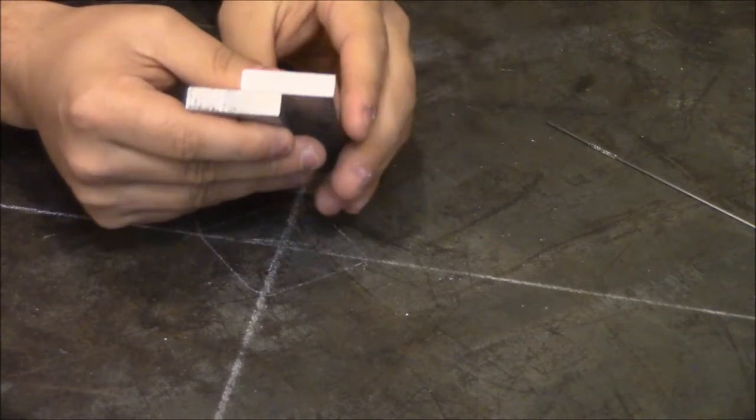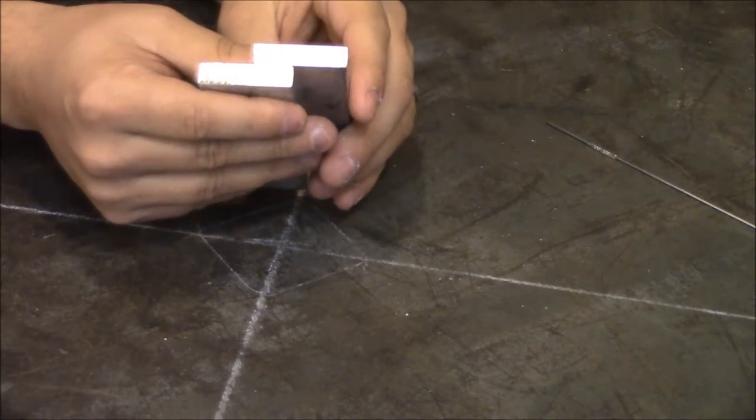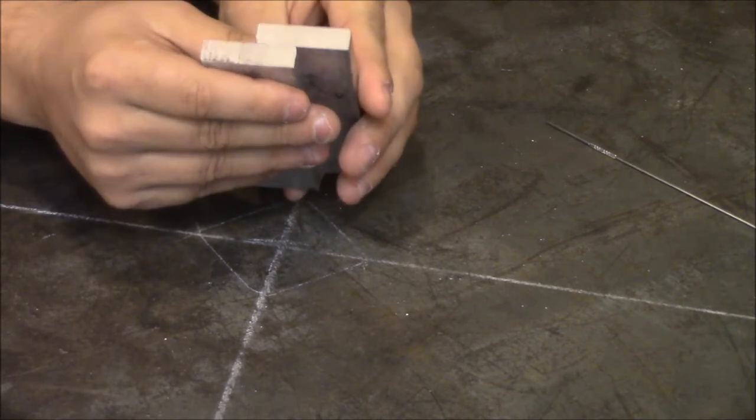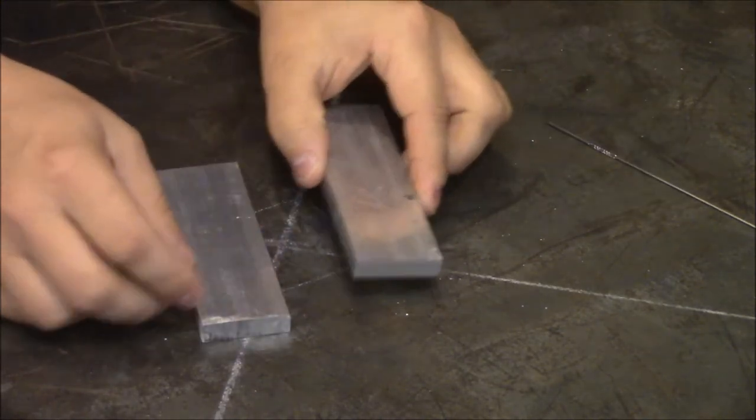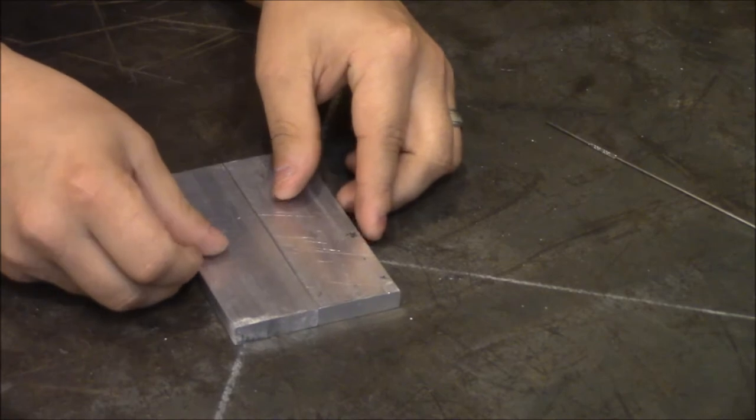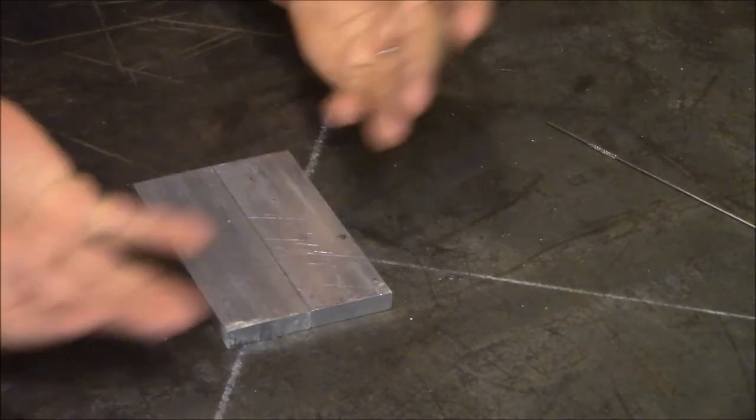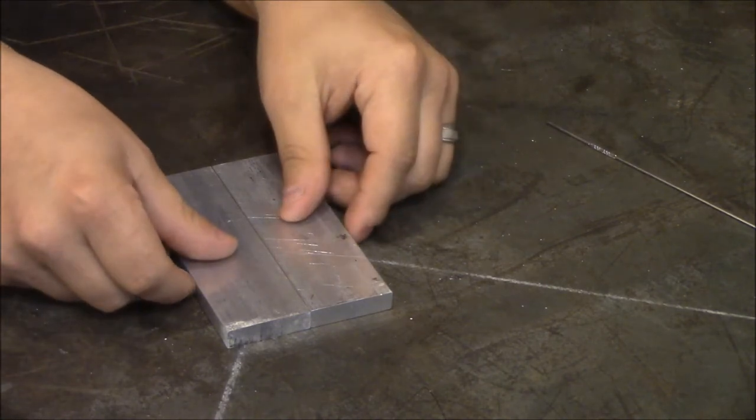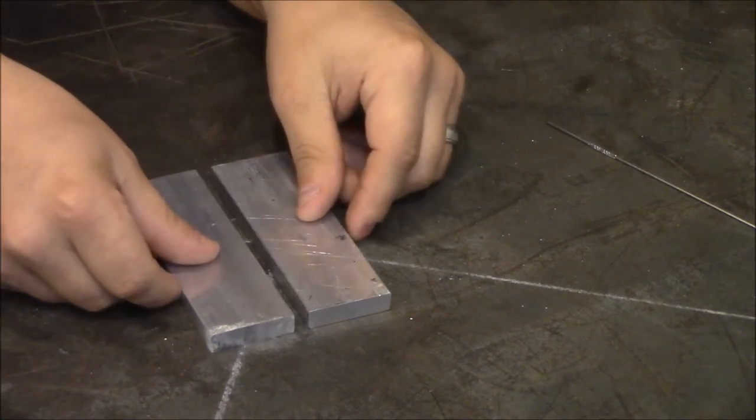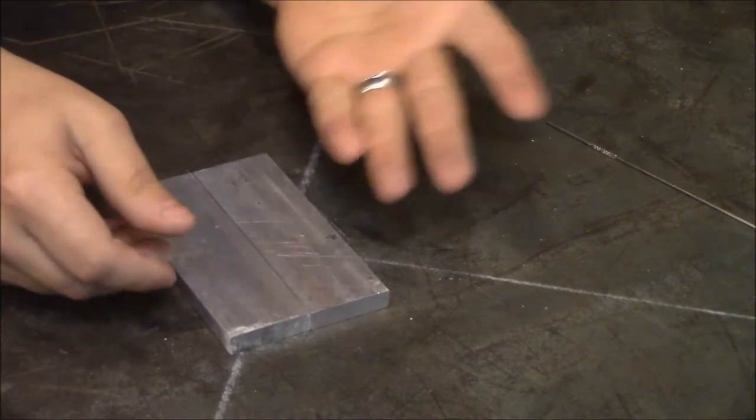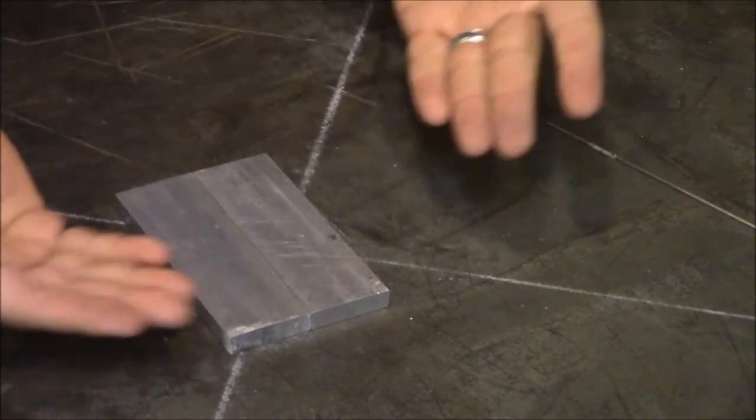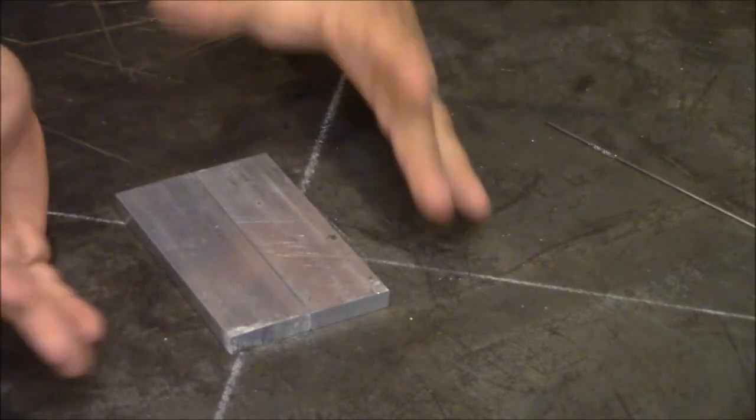Then you know, just two members together, this could be a square groove weld. You could have gaps, you don't have gaps, you have endless possibilities. You could have one side beveled, both sides beveled, all sorts of different configurations for these joints.